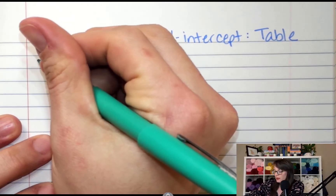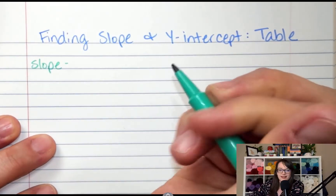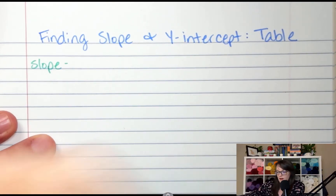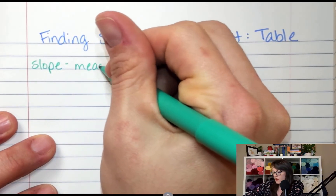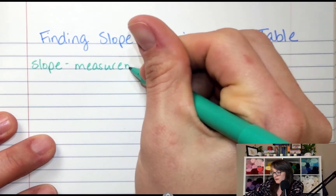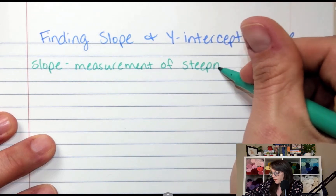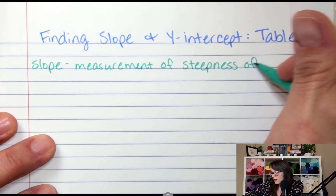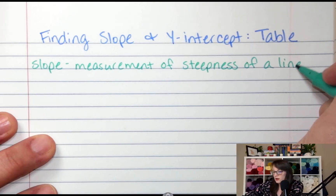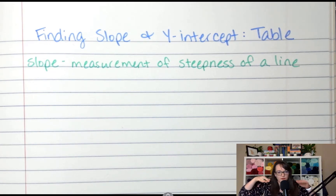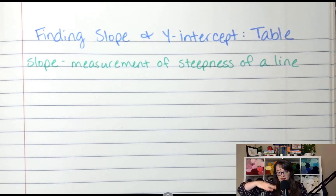Slope is the measure of the steepness of a line. So if something is really steep, kind of steep, not very steep, or flat — that's what slope is. It's the measurement of that angle.